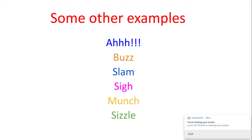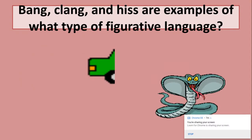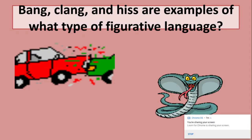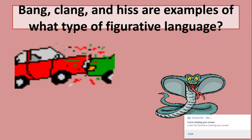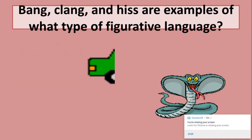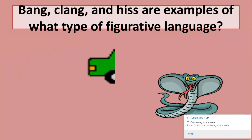You should also be encouraged to use some of these in your writing too, just to make your writing more creative. Alright, let's practice now. What is this an example of? Bang, clang, and hiss are examples of what type of figurative language? If you said onomatopoeia, you are correct — those are sound words. Bang, clang, and the hissing of the snake are all sound words.